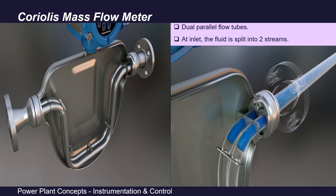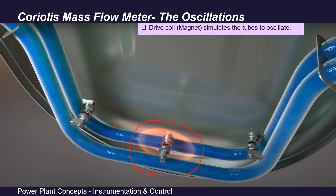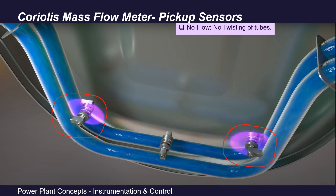As we can see in this picture, the flow meter has dual parallel flow tubes. When the process fluid enters the flow meter it is split into two parts — half of the fluid passes through each tube. During operation, a drive coil stimulates the tubes to oscillate in opposition to each other at the natural resonant frequency of the tubes.